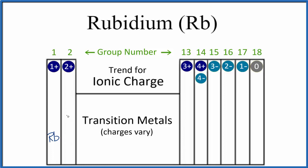What this looks like is rubidium will form ions by losing an electron to become ions that are 1+. The elements on the other side form negative ions, so they accept that electron. Because of that, you have a positive and a negative, and you form an ionic bond.